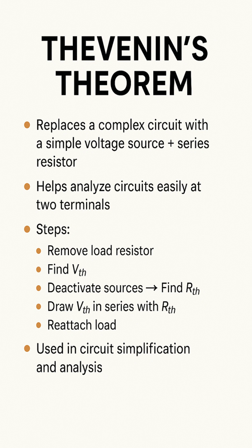Third, to find the Thevenin resistance RTH, you must deactivate all the independent sources in the original circuit. This means you replace all voltage sources with a short circuit, like a plain wire, and all current sources with an open circuit, like a break in the wire. After deactivating the sources, you then calculate the total equivalent resistance looking back into the two open terminals.